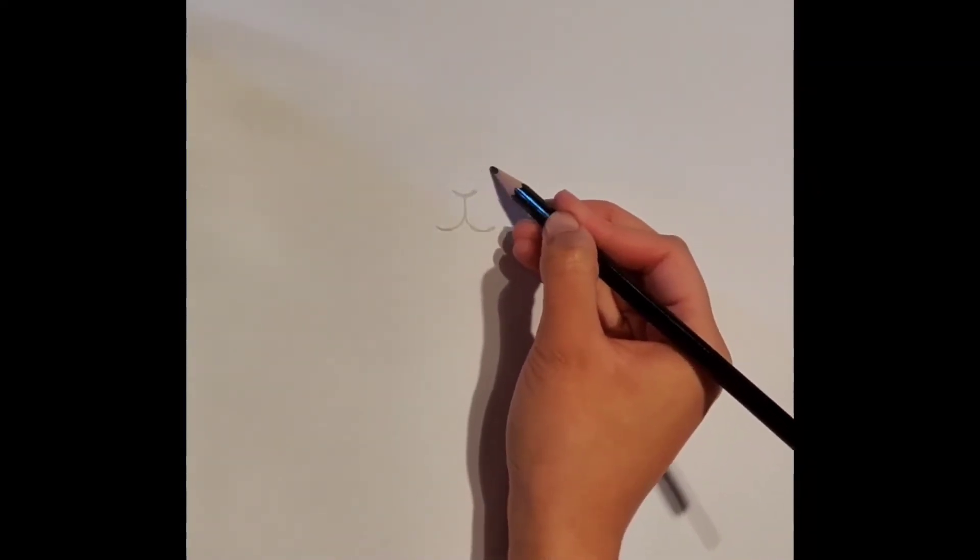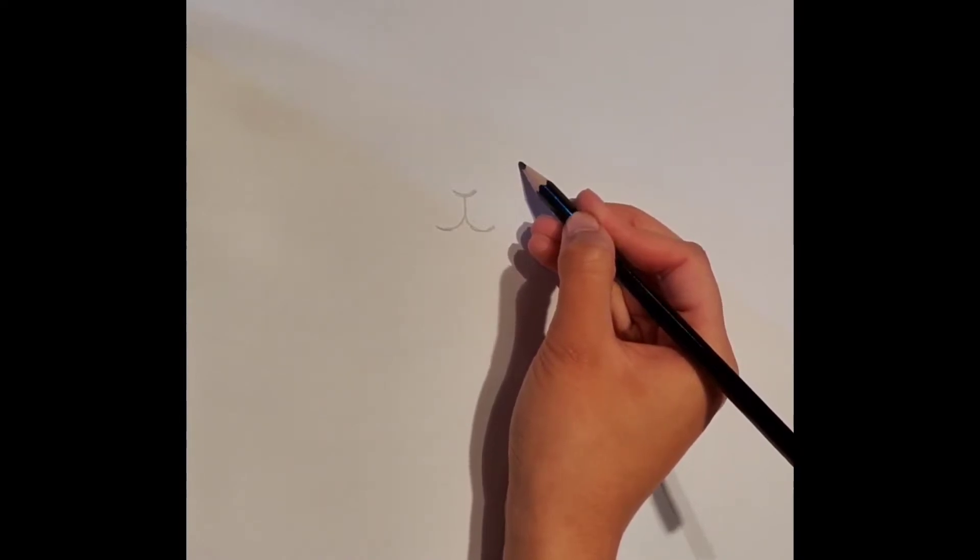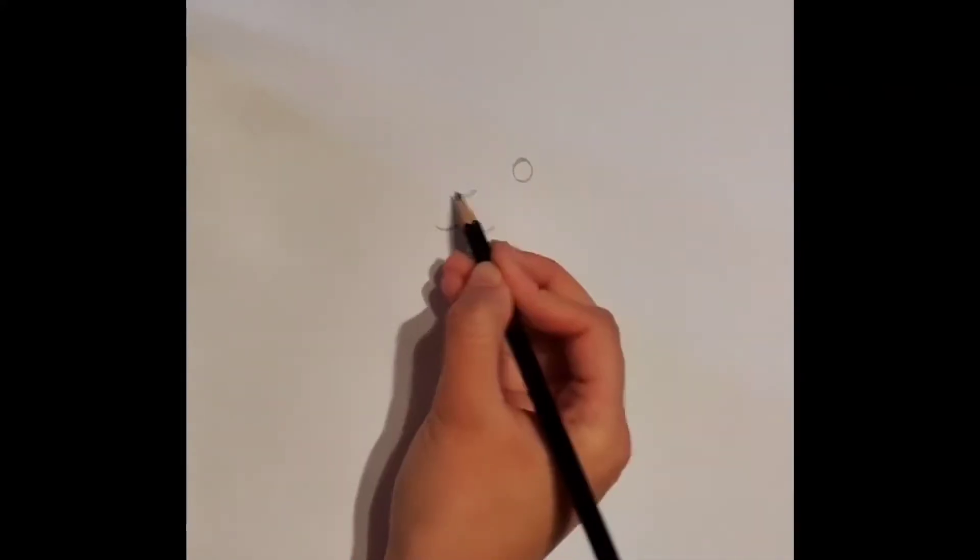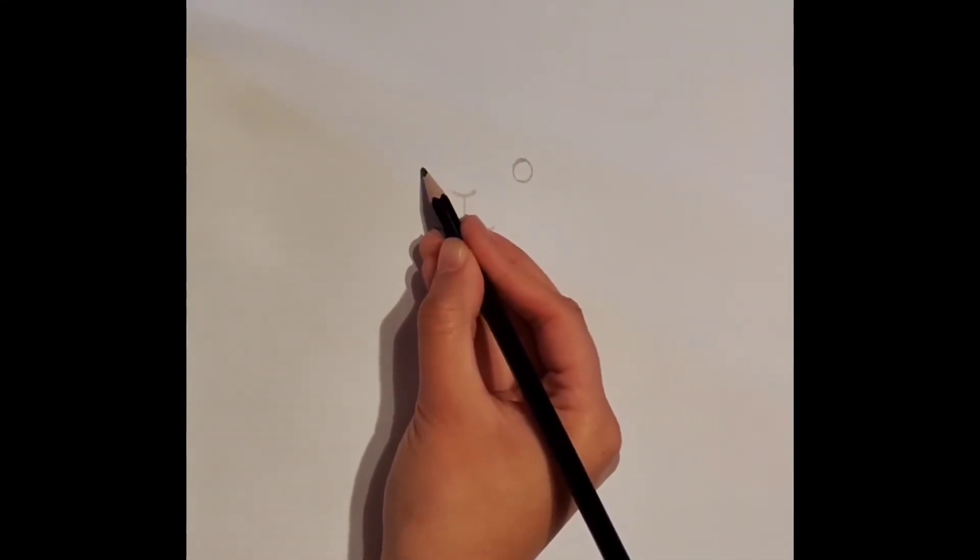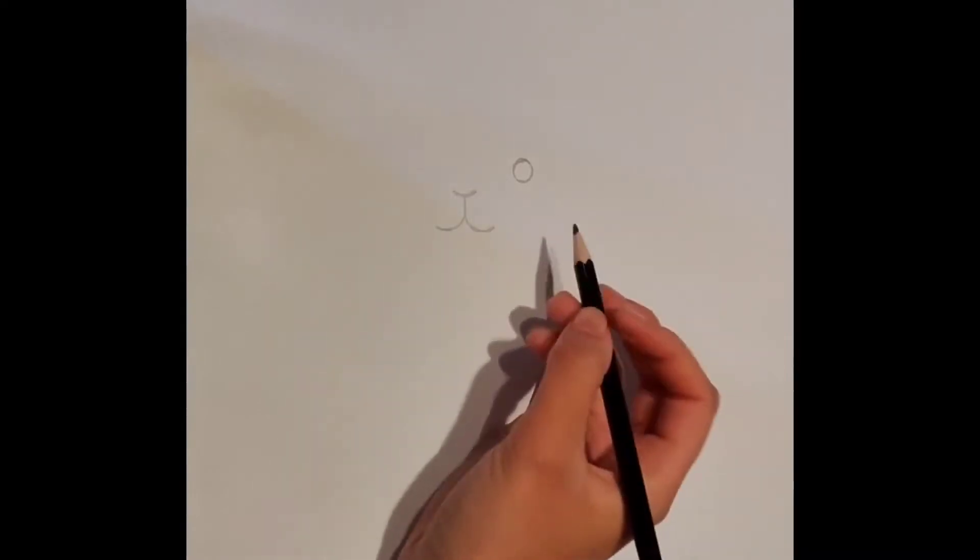Now, from the tip of the nose and right to the side, we are going to draw the cat's eyes. Draw two small circles, make sure they are about the same size and that they are an equal distance from each other.